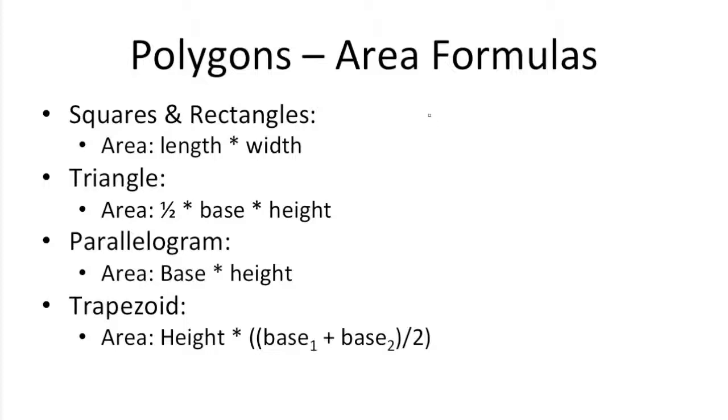So for squares and rectangles, the area is just the length times the width. For squares, it would just be the same number on all sides, so it would just be one side times itself. And for rectangles, it would be length times width.